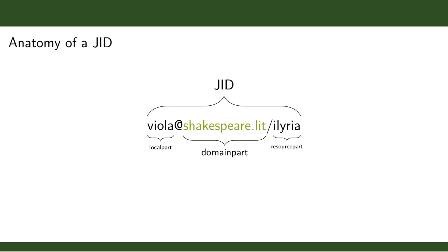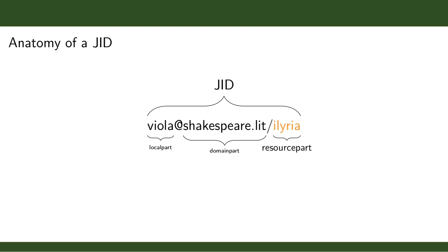If we're a client connecting to viola@shakespeare.lit, we do a DNS lookup for shakespeare.lit, figure out where to connect, and make that connection. Together the local and domain parts are called the bare JID — for example, viola@shakespeare.lit — which references an account on the server. This is how you address a message to a friend. Then there's the full JID, which includes the resource part — something I think is especially interesting and unique about XMPP compared to other federated protocols.